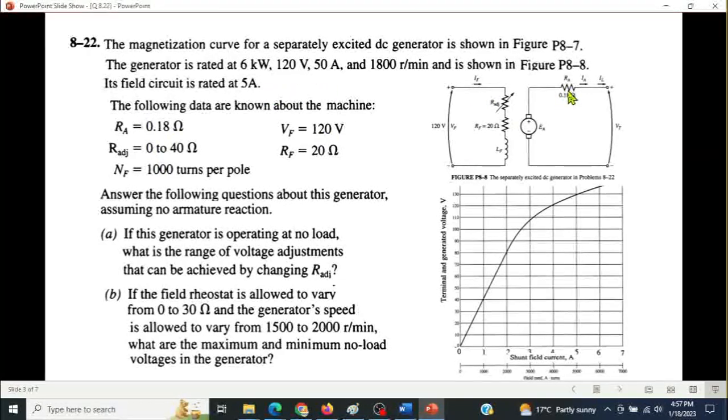RA already written, R adjust range given 0 to 40 ohm, VF 120 volt, RF fixed 20 ohm, NF 100 turns per pole, number of turns given 1000 turns per pole. Answer the following question about the generator.